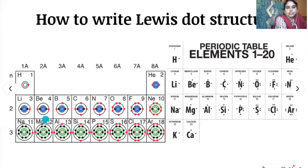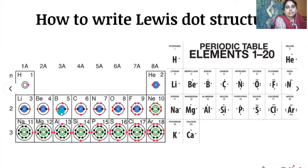For beryllium, atomic number is four, electronic configuration is 1s2, 2s2. The outermost shell contains two electrons, so valence electrons are two — represent with two dots on beryllium. For boron, atomic number is five, electronic configuration is 1s2, 2s2, 2p1. Inner core electrons are two and outermost shell contains three electrons, so write three dots on boron.